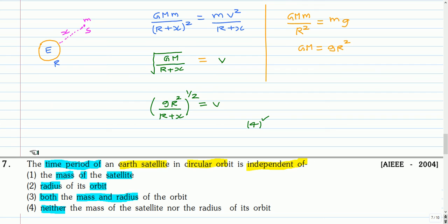Here is the next question. The time period of an Earth's satellite in circular orbit is independent of: option one, mass of the satellite; option two, radius of its orbit; option three, both mass and radius; option four, neither mass nor radius. You can pause and attempt this question.